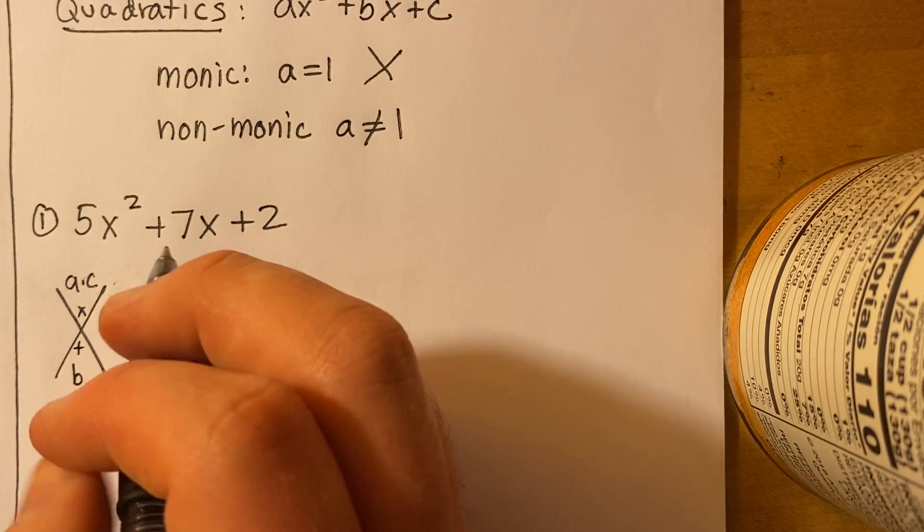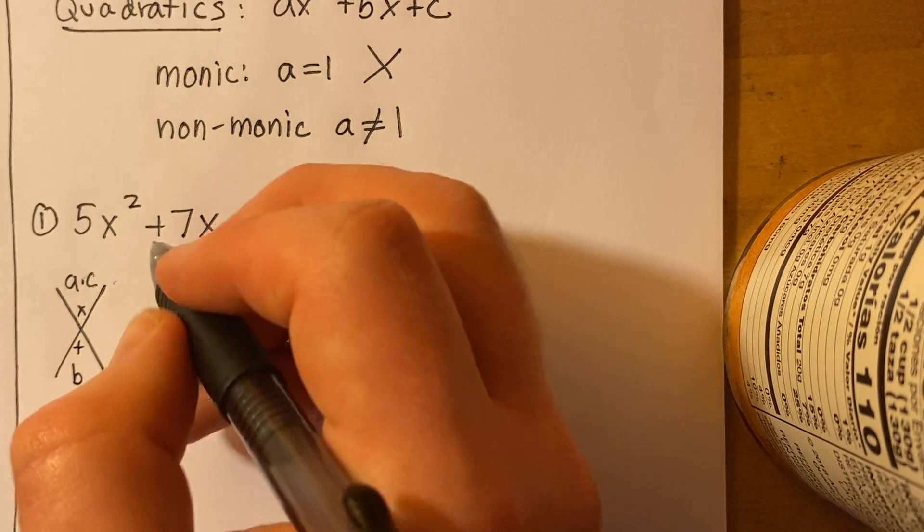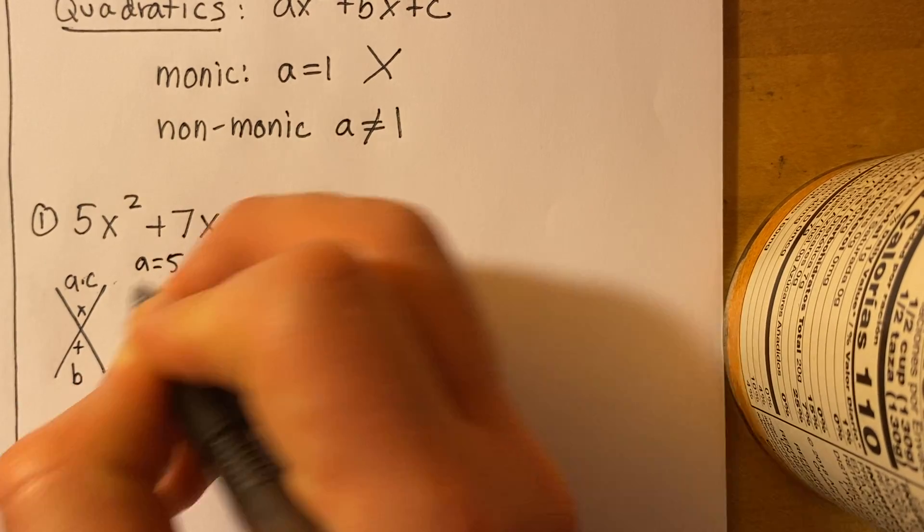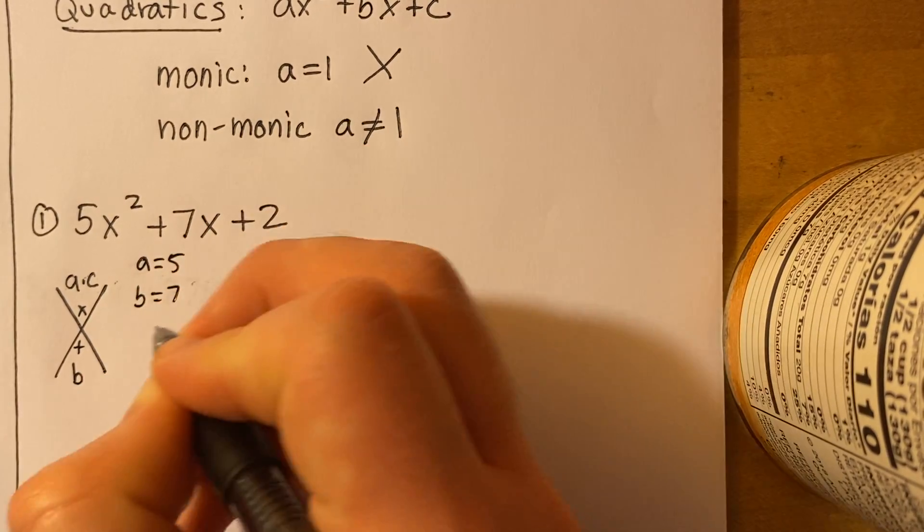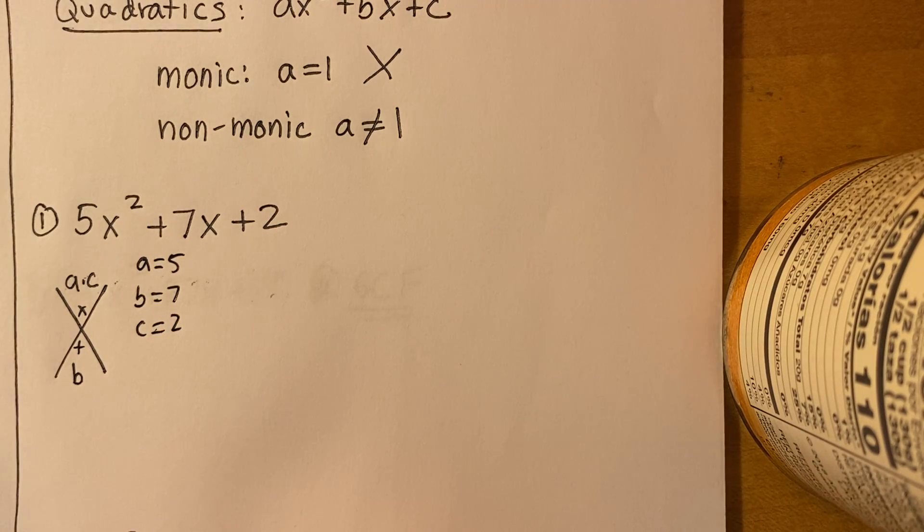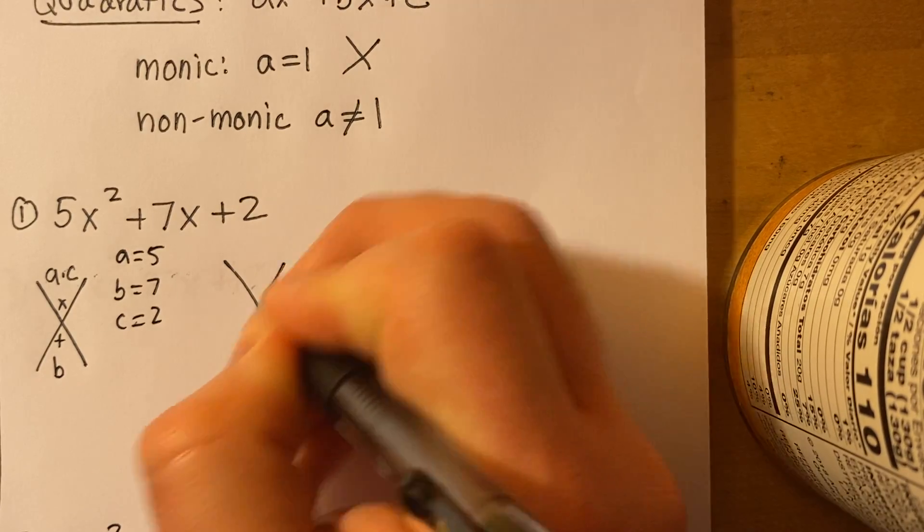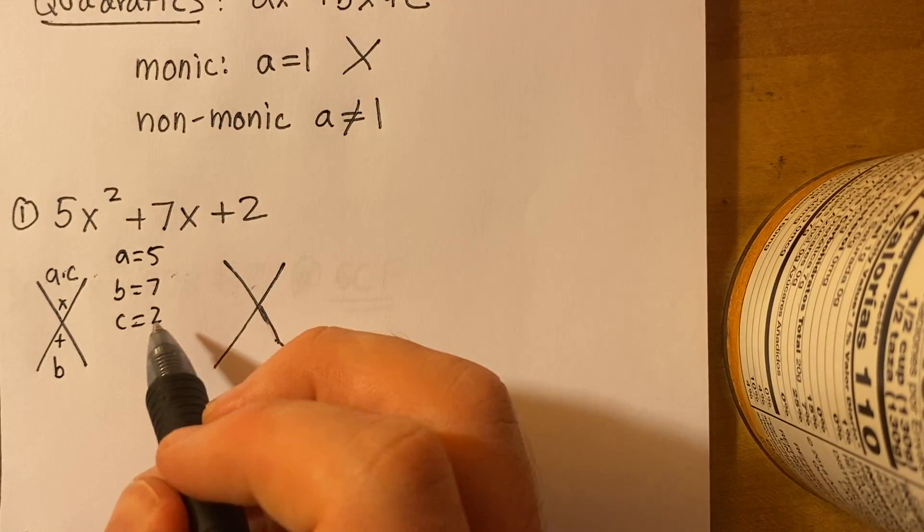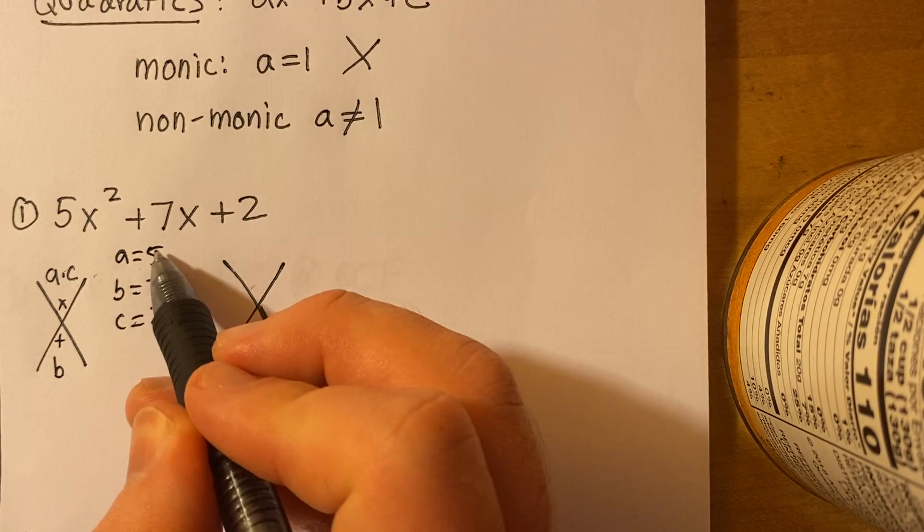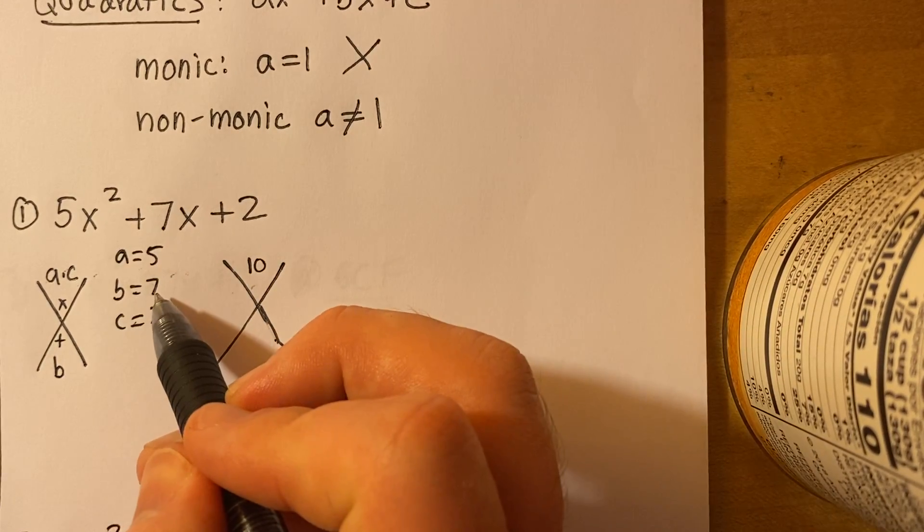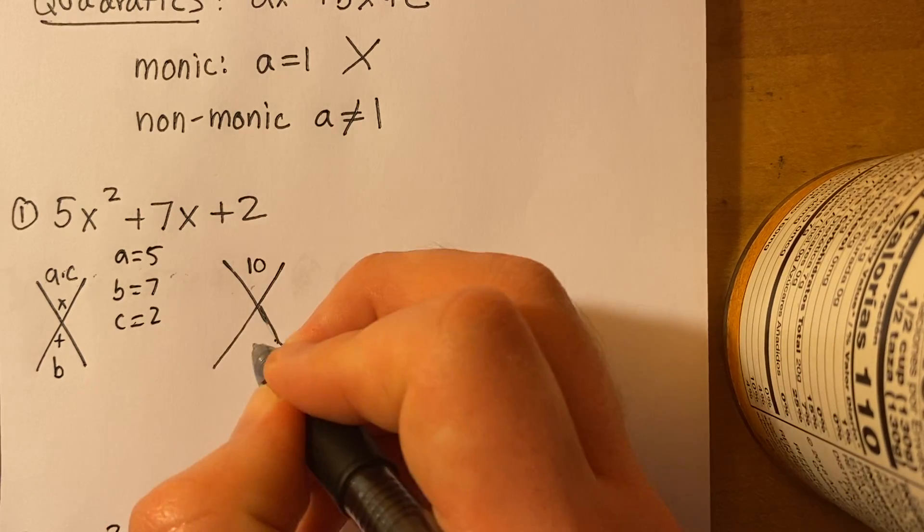Now, as a reminder, let's label our a, b, and c. So here, our a is 5, our b is 7, and our c is 2. So let's plug it into our X. I'm going to do 5 times 2, a times c. So I'm going to write 10 at the top, and then I'm going to write 7 at the bottom because b is 7.